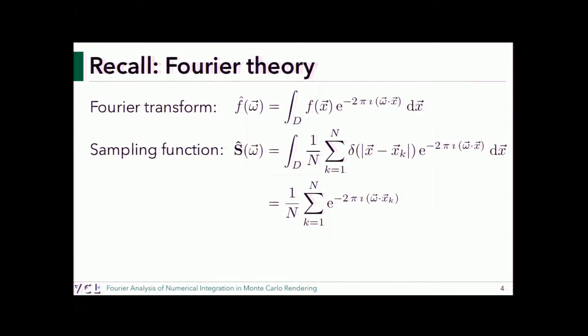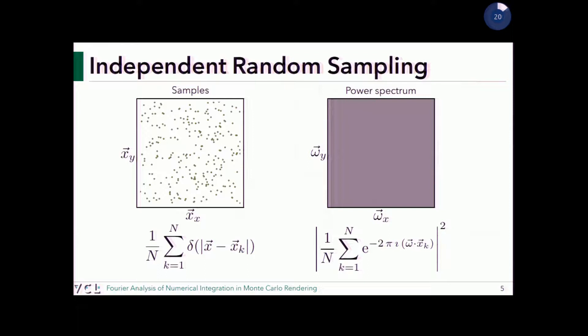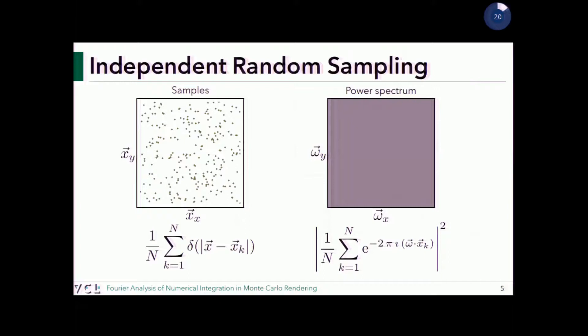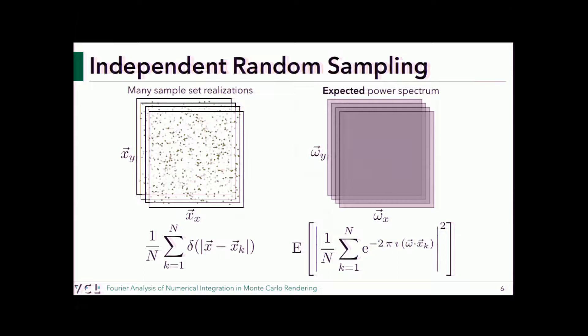We can start visualizing this spectrum. It's complex, so we visualize the power spectrum — the square of the amplitude. For random samples, this is what the expected spectrum looks like. Any point in the frequency domain is a frequency variable, any point in the sampling domain is a sampling variable. We'll use colors: green for sampling-related, purple for other. This is one realization; we can do many realizations and get statistics.